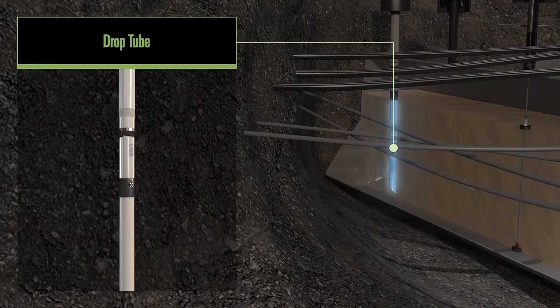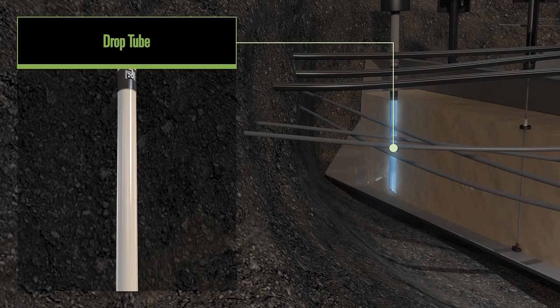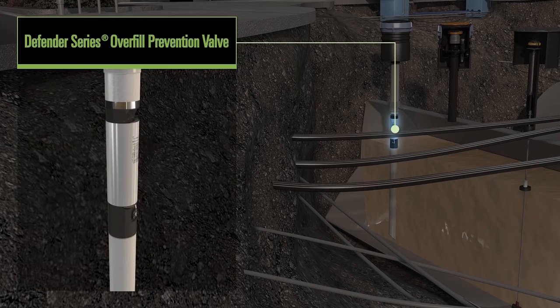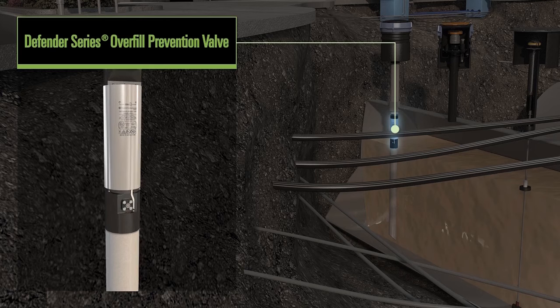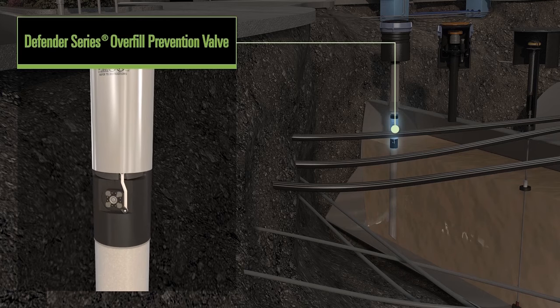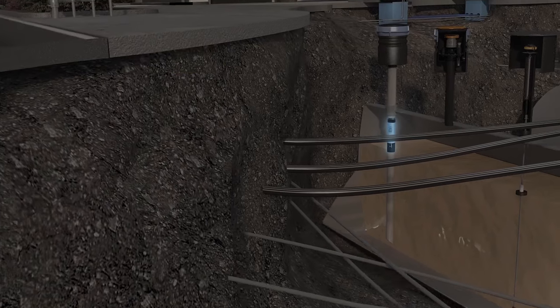The fuel flows through the hose into the drop tube and into the underground storage tank. An overfill prevention valve monitors the level of fuel in the tank and utilizes a float shutoff mechanism to stop fuel delivery once the tank is at 95% volume to prevent an overfill of the tank.